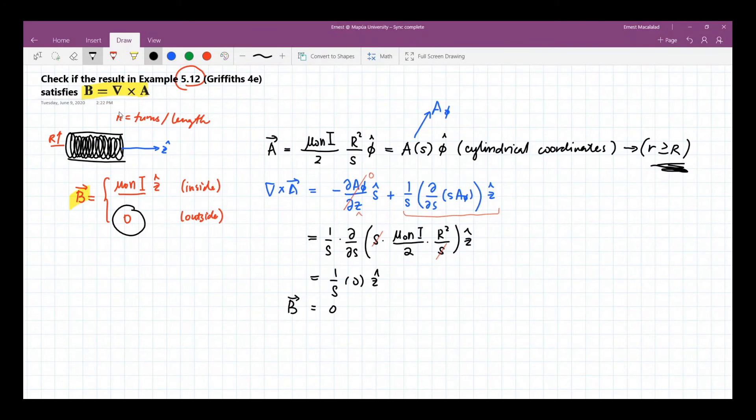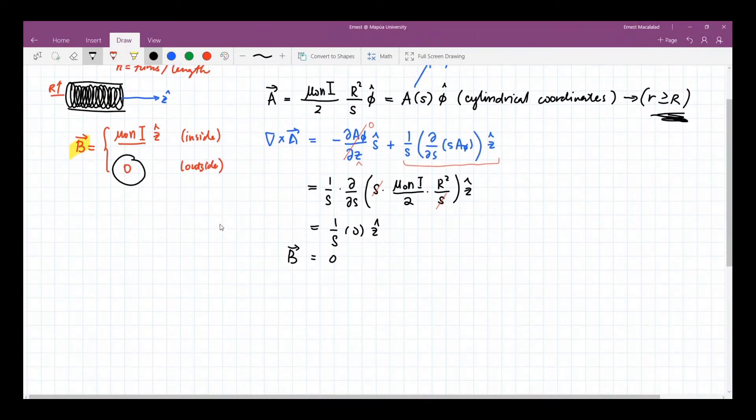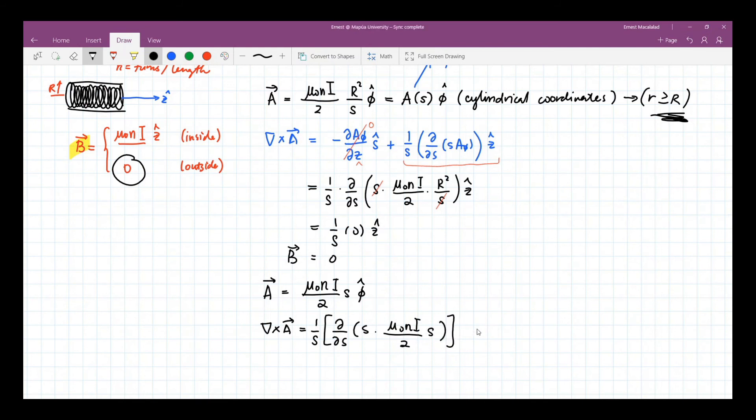Now how about for the inside? For the inside, let me write it here. Here A, as mentioned here, would be mu naught n I over 2 s phi hat. So the curl of A would be equal to, again, this will be 0. This will remain the same. So this is 1 over s times derivative with respect to s of s times this one.